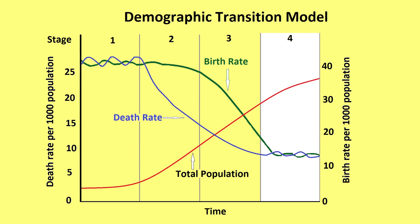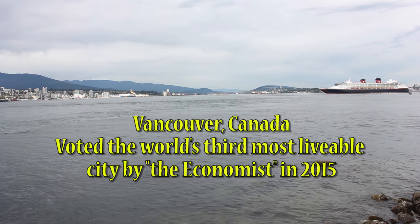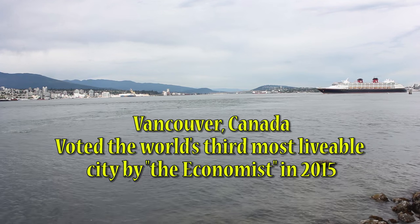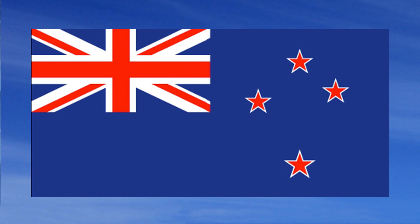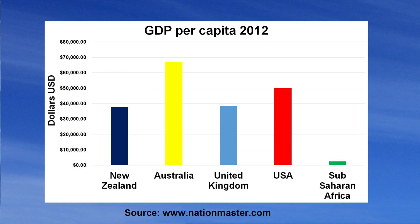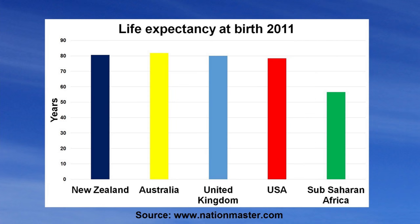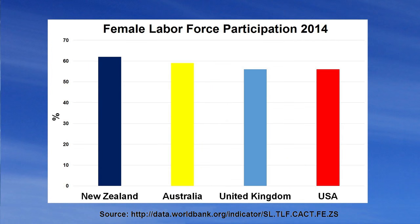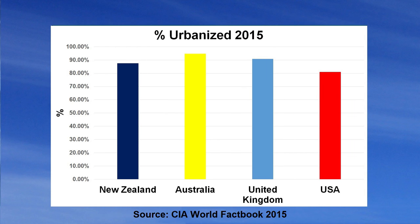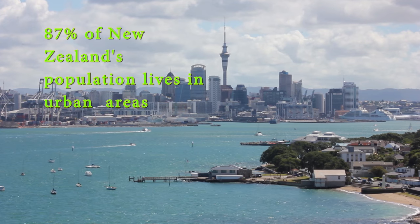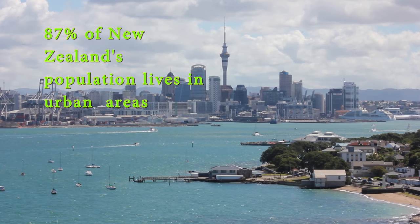In stage 4 of the model, both birth rates and death rates are low, thus causing a stabilisation of the total population growth. Most more economically developed countries are in stage 4 — for example, New Zealand, Australia, the United States, and the United Kingdom. These countries have strong economies, a highly educated population, strong healthcare systems, and more women in the workforce. These countries are also highly urbanised, due to the previous migration of people from rural to urban areas.